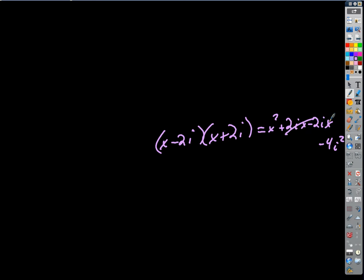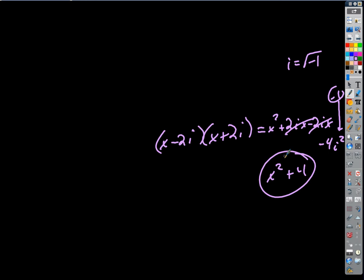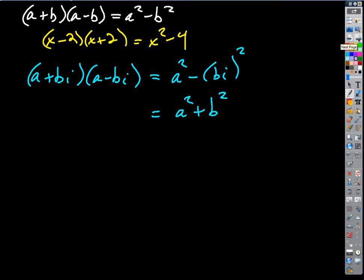The 2ix and negative 2ix cancel. And i squared equals negative one — since i equals the square root of negative one, squaring it undoes the square root. So I end up with x squared minus 4 times negative 1, which is x squared plus 4. In fact it always works that way: complex conjugates a plus bi times a minus bi always give a squared plus b squared.